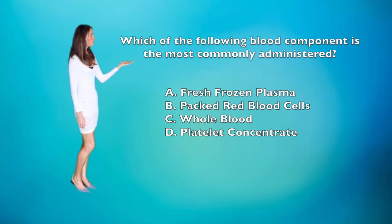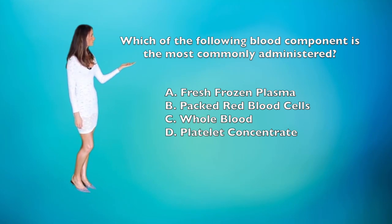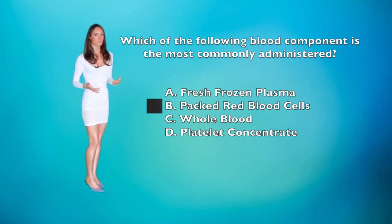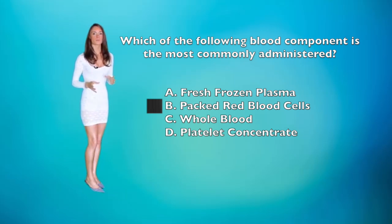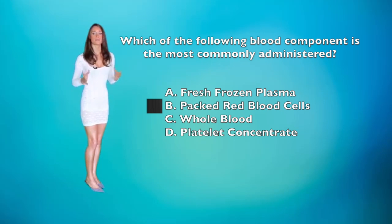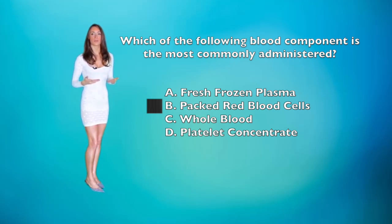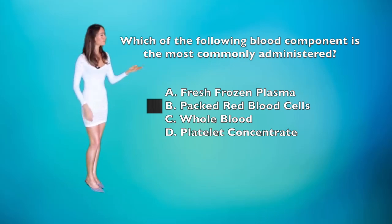Question number two: Which of the following blood components is the most administered? A. Fresh frozen plasma. B. Packed red blood cells. C. Whole blood. Or D. Platelet concentration. The answer is B — packed red blood cells (PRBCs) are the most commonly administered blood product. They maintain intravascular blood volume and improve oxygen-carrying capacity and oxygen transport to the tissues. In many hypovolemic states, PRBCs are ordered to regain proper fluid volume.